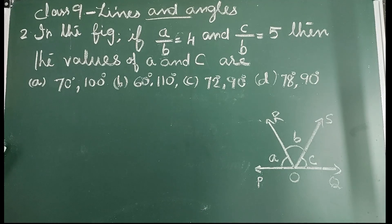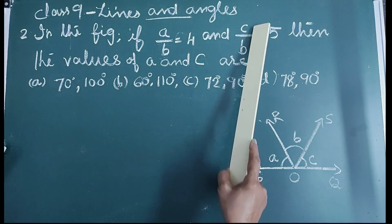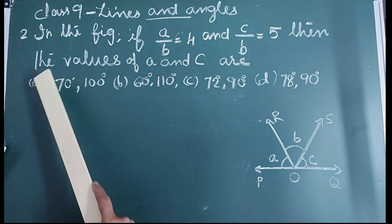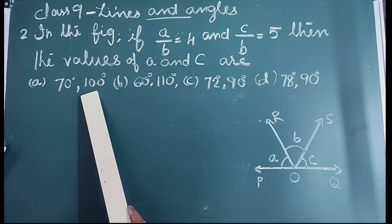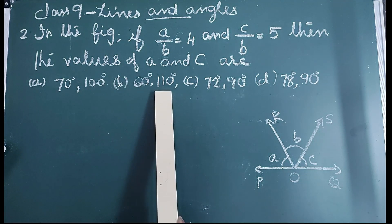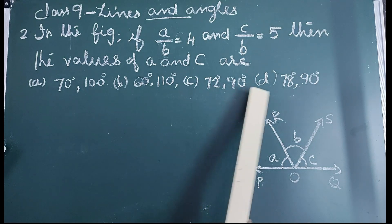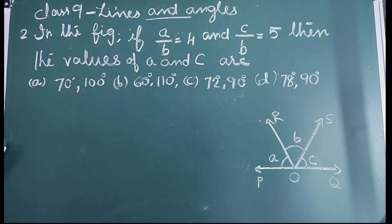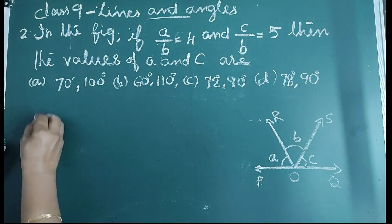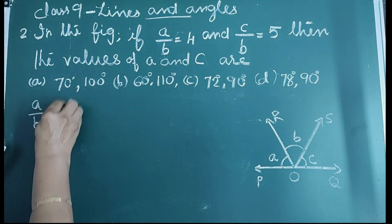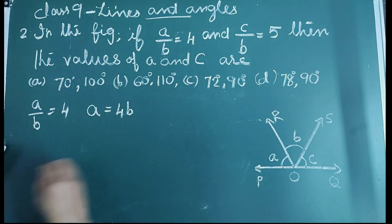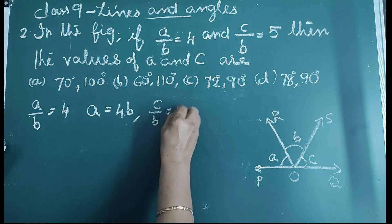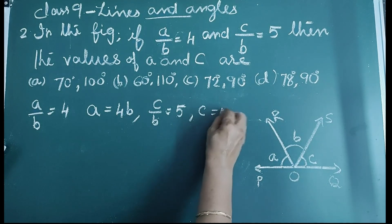Second question: in the figure, if A/B = 4 and C/B = 5, then the values of A and C are — options: 70° and 100°, 60° and 110°, 72° and 90°, 78° and 90°. From the given conditions, A = 4B and C = 5B.